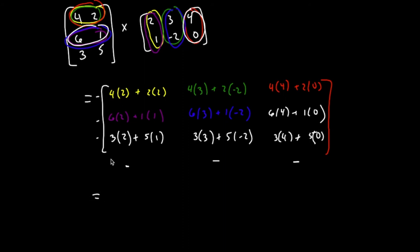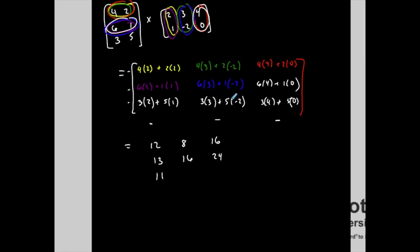And then simplify: eight plus four is twelve; twelve minus four is eight; sixteen plus zero is sixteen; twelve plus one is thirteen; eighteen minus two is sixteen; twenty-four plus zero is twenty-four; six plus five is eleven; nine minus ten is negative one; and twelve plus zero is twelve. This is my final product — a three by three matrix.